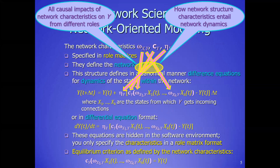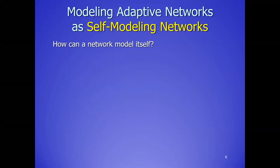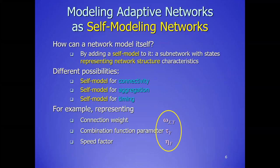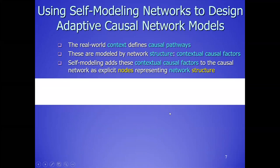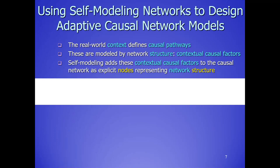This time I want to have some more attention to the social network application area. Remember the self-modeling network idea — for a number of characteristics we create extra nodes in the network. You specify the nodes and then you have an extended network, that's the self-modeling network. The real-world context defines usually causal pathways, and the network structure is what models that — a kind of configuration of the world. There are contextual causal factors as well.